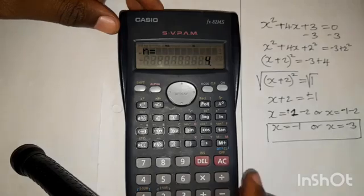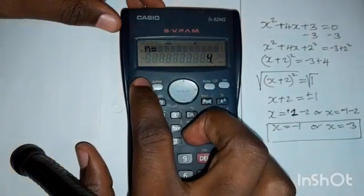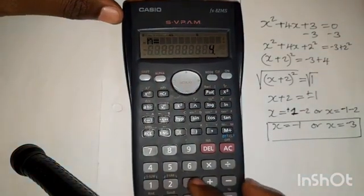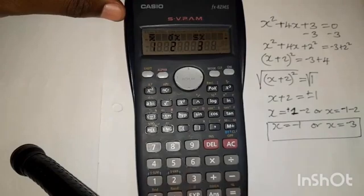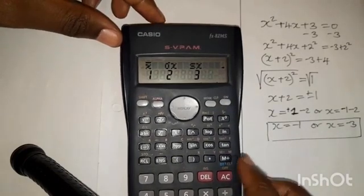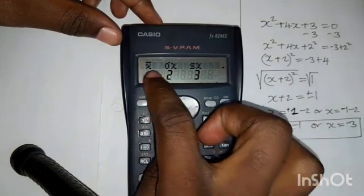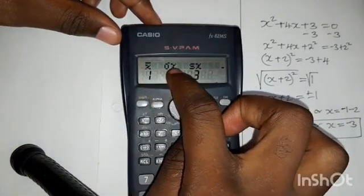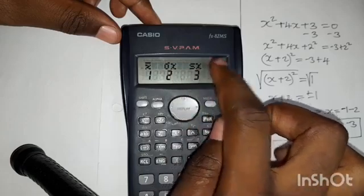After that, you press shift, then press 2. So after pressing 2, you can see that you have these options, but you don't want the mean, you don't want the standard deviation, you don't want this.